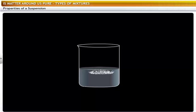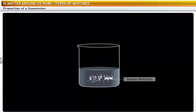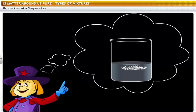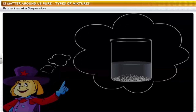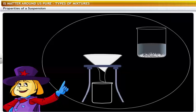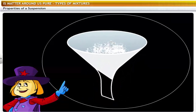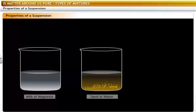A suspension is a heterogeneous mixture in which the solute particles do not dissolve and remain suspended throughout the solvent. The solute particles can be seen with the naked eye. So that's why when chalk powder was added to the beaker of water, it didn't dissolve — the mixture of chalk powder and water is an example of a suspension. Other examples of suspensions include milk of magnesia, sand in water, and flour in water.